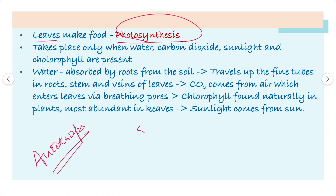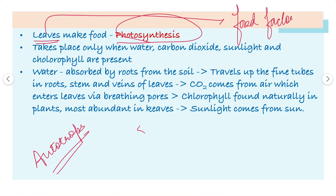Leaves are called the food factories of plants because they make food in the plants. They are able to do this because they contain chlorophyll, and most leaves are green in color due to the presence of this green pigment called chlorophyll.